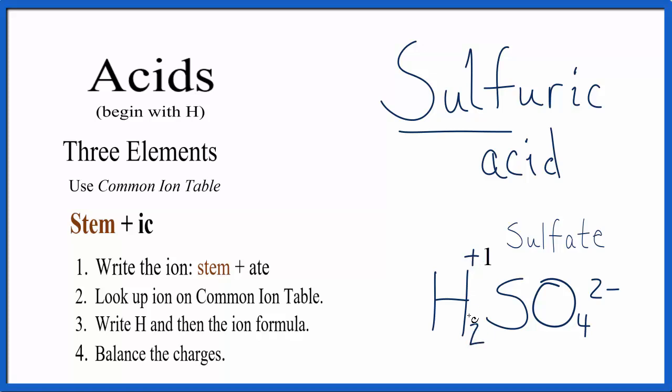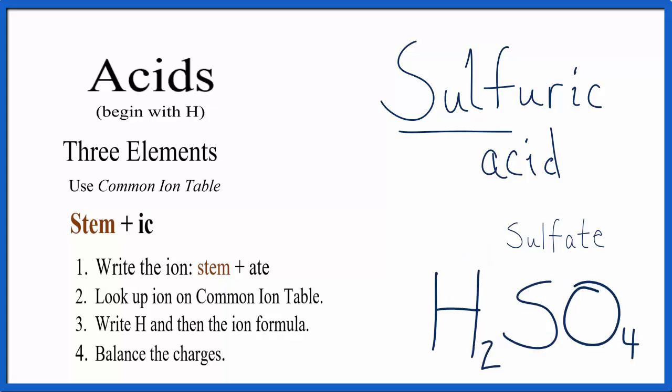This minus 2 needs to be balanced by a plus 2. So if I have two hydrogens, 2 times the plus here, that's plus 2. That'll balance out and that'll give me a net charge of zero, and that makes H2SO4 the correct formula for sulfuric acid.